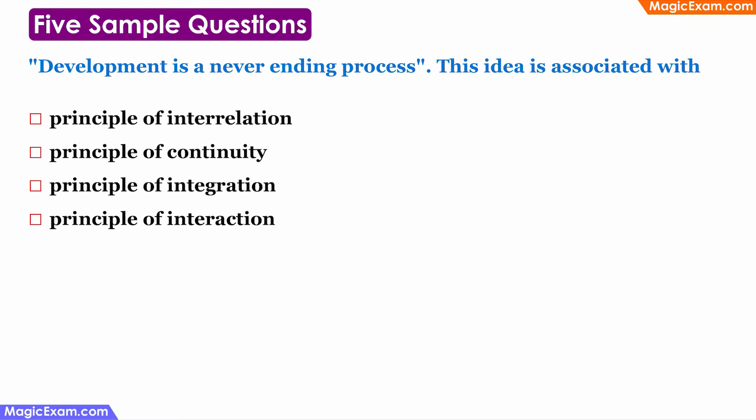Now let us look at some sample questions from previous question papers. The first question is: 'Development is a never ending process — this idea is associated with which of these principles?' We have seen that development is a continuous process which does not stop anywhere, which is never ending. Therefore, 'development is a never ending process' is associated with the principle of continuity.